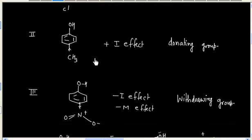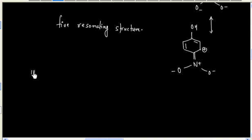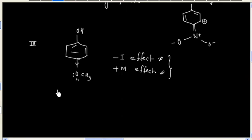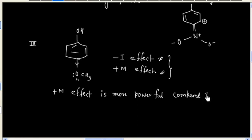Next we have OCH3. It will show minus I effect as well as plus M effect. So minus I effect will increase the acidity but plus M effect will decrease the acidity. So these two effects are contradicting to each other. Plus M effect is more powerful compared to minus I effect.